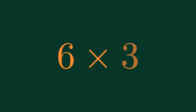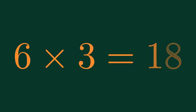What is 6 times 3? 6 times 3 is equal to 18.